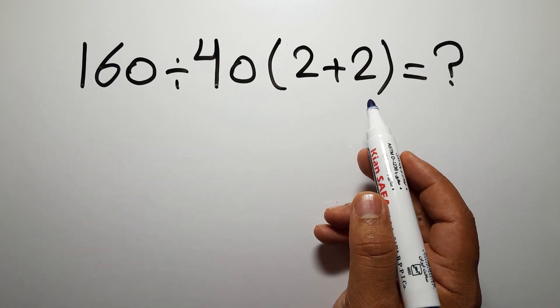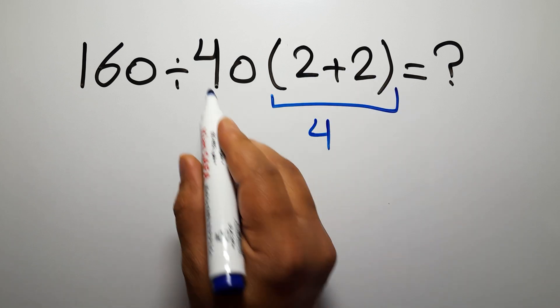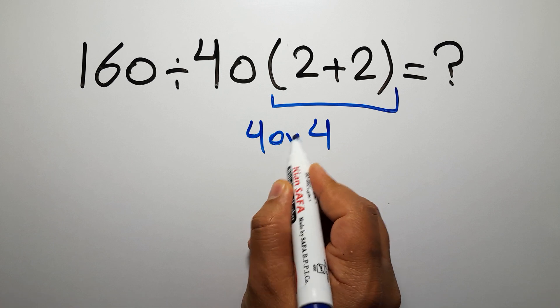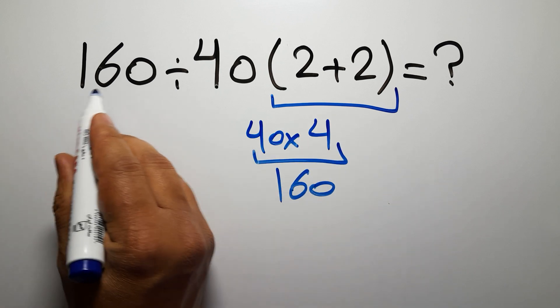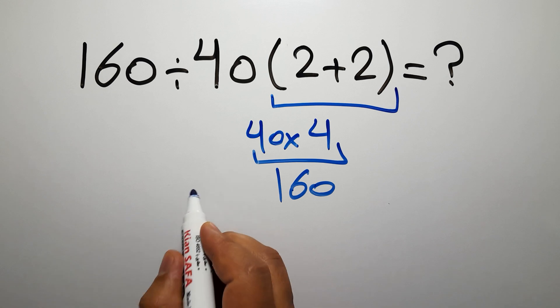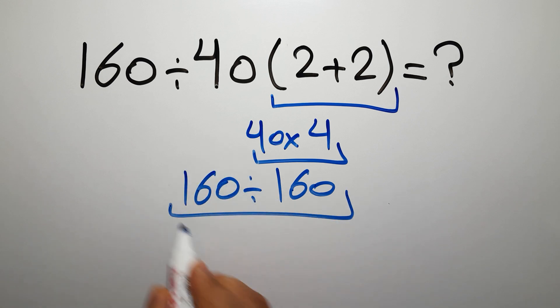Let's go down and start it. 2 plus 2 gives us 4. And 40 times 4 gives us 160. 160 divided by this. 160 divided by 160 gives us just 1.